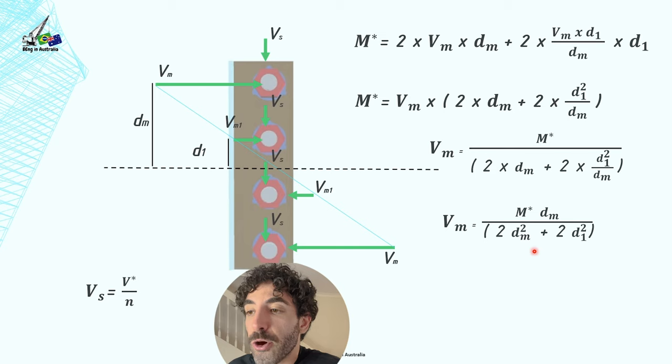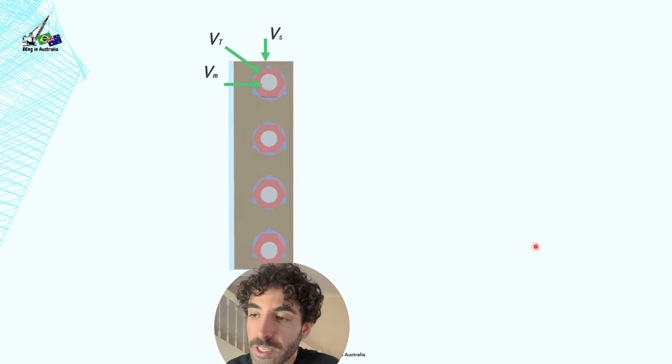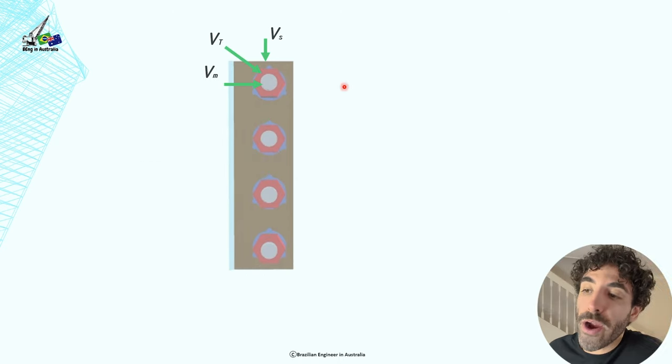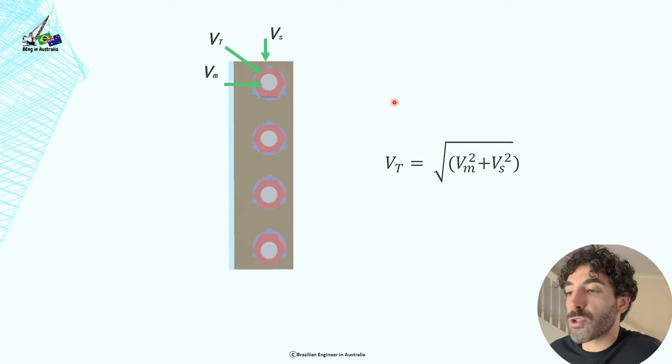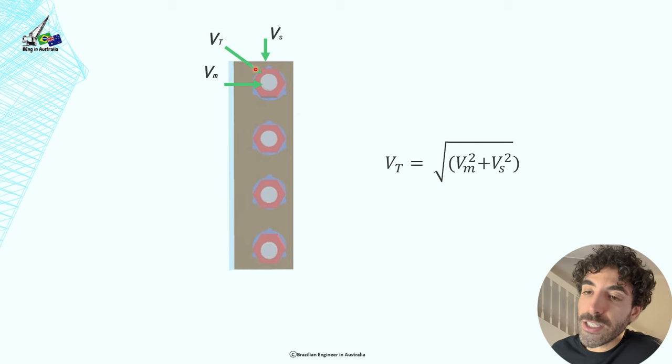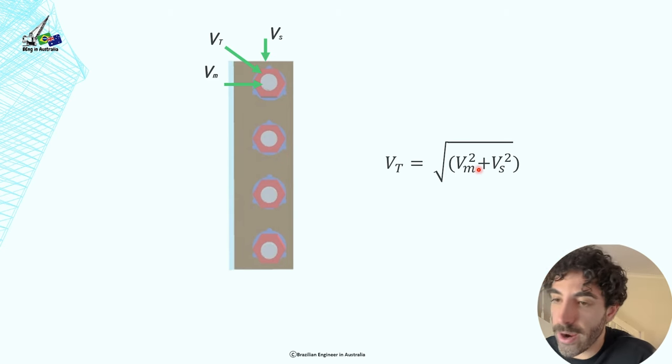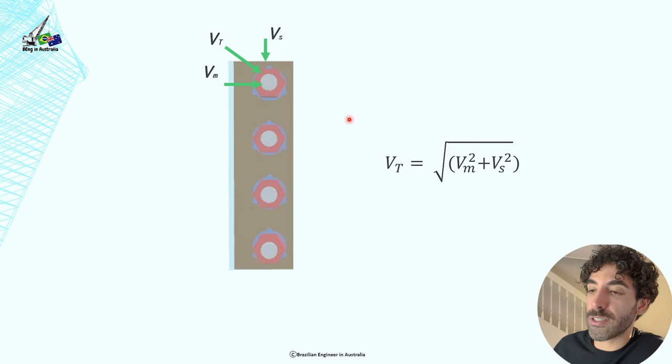Now finally, we know that the magnitude of a vector can be calculated by taking the square root of the sum of the squares of its components. And what I mean by that is that the total shear in this bolt for this connection is going to be square root of V_m² plus V_s². And that's the shear that you need to design the bolt in this connection.